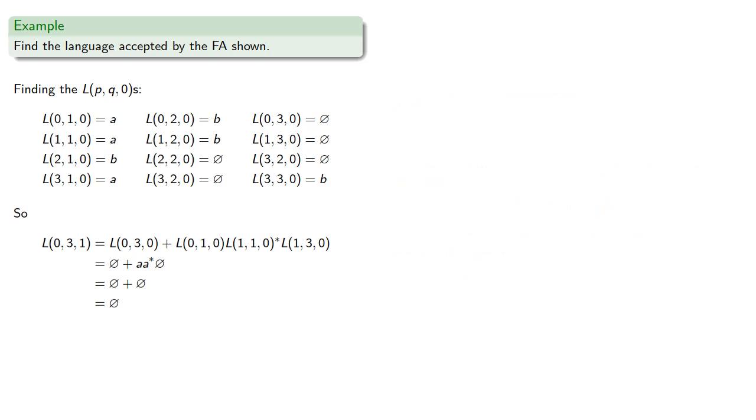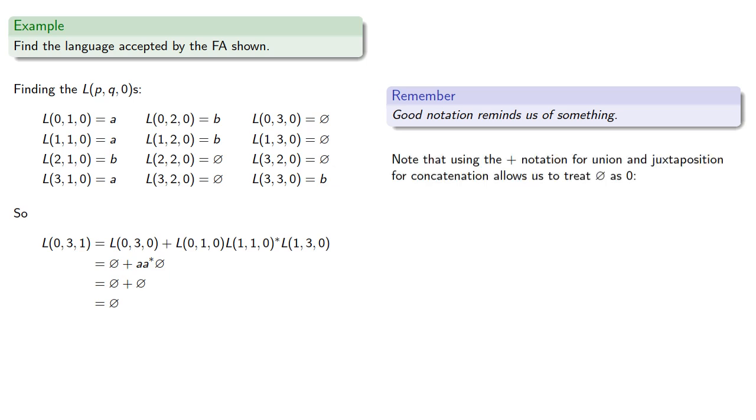Now it's worth pausing here briefly and pointing out that good notation reminds us of something. Note that using the plus notation for union and juxtaposition for concatenation allows us to treat the empty language as a 0. So just a 0 plus a is a, and a 0 times a is 0, then the empty language plus a string. Remember, that's just the union of something with the empty set, so it's just whatever the other set is. Meanwhile, if we concatenate with the empty language, we actually get the empty language.